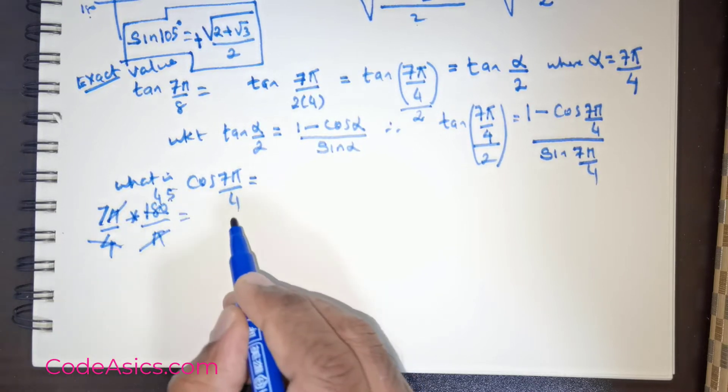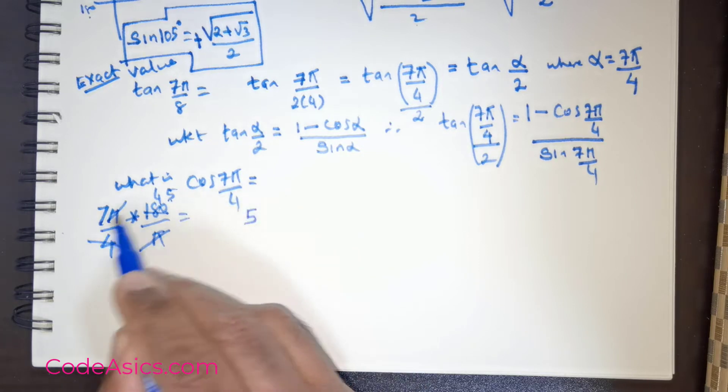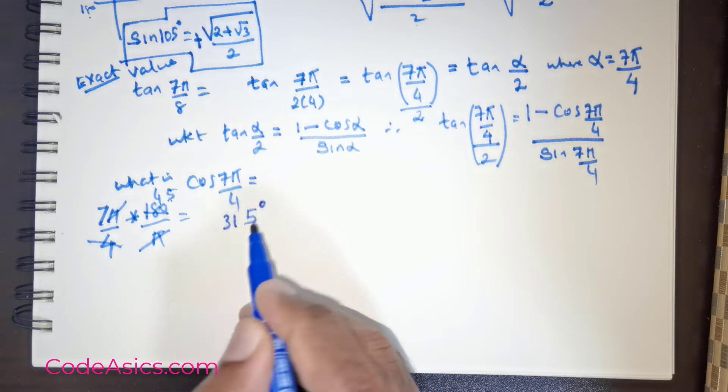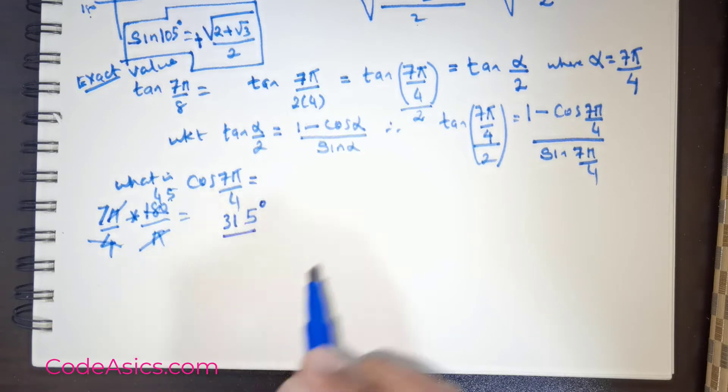7 times 45. 5s are 35, 3. Then 4s are 28, 29, 30, 31. 315 degrees is the outcome. So this is in degrees, 315.